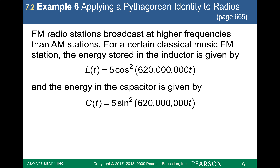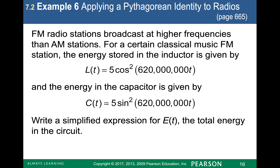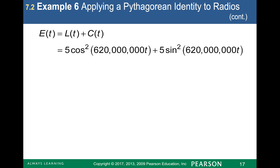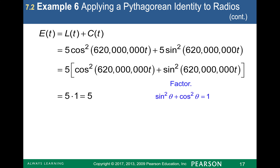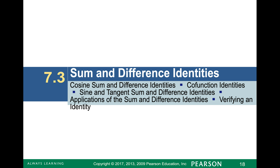Here is an example of applying the Pythagorean identity to a radio circuit problem. If we're given that the energy of an inductor is 5 cosine squared of 620 million t, and the energy of the capacitor is given by a secondary equation, and we want the total energy of the circuit, we add the two expressions. Remembering that sine squared plus cosine squared equals 1, the total energy simplifies to 5.